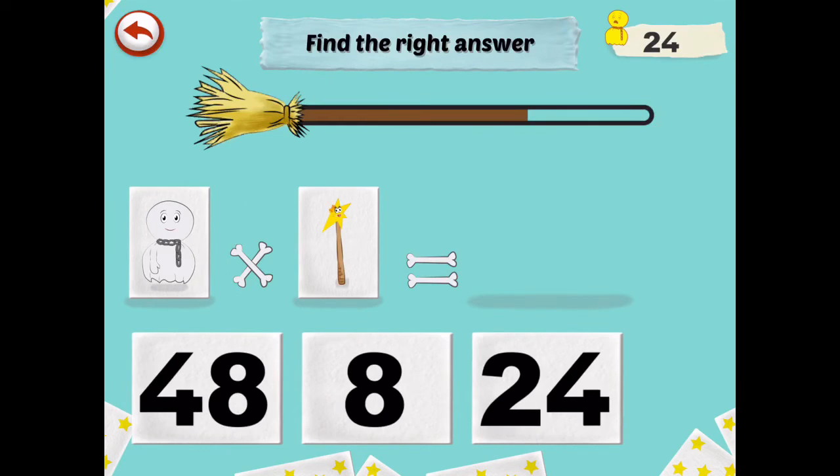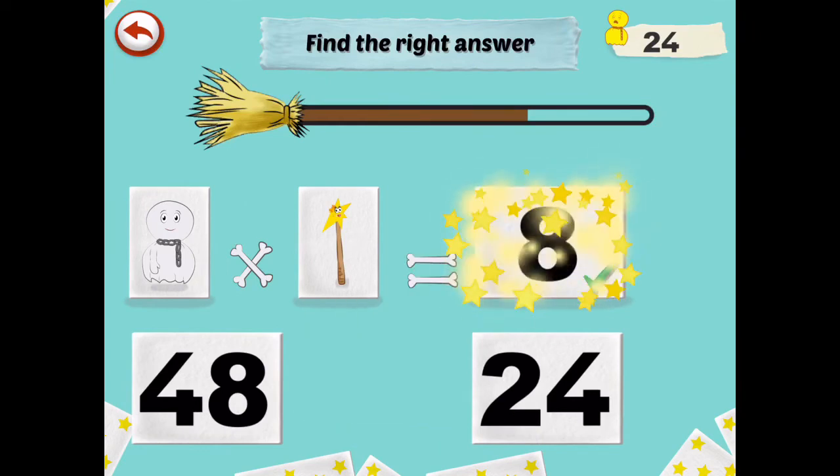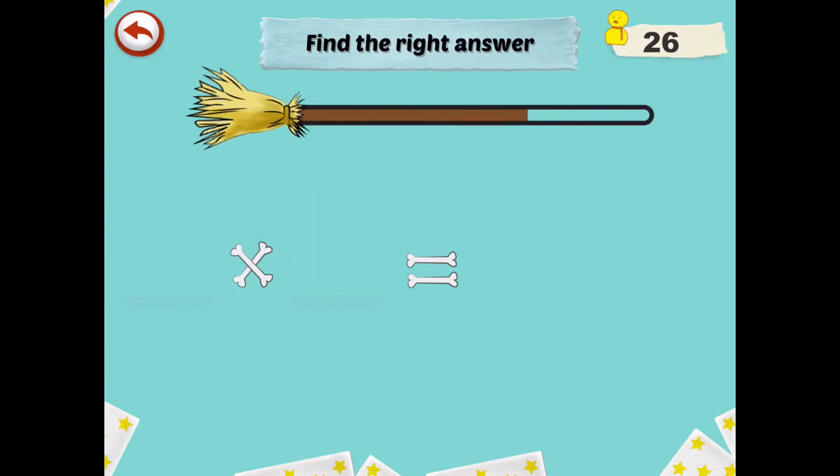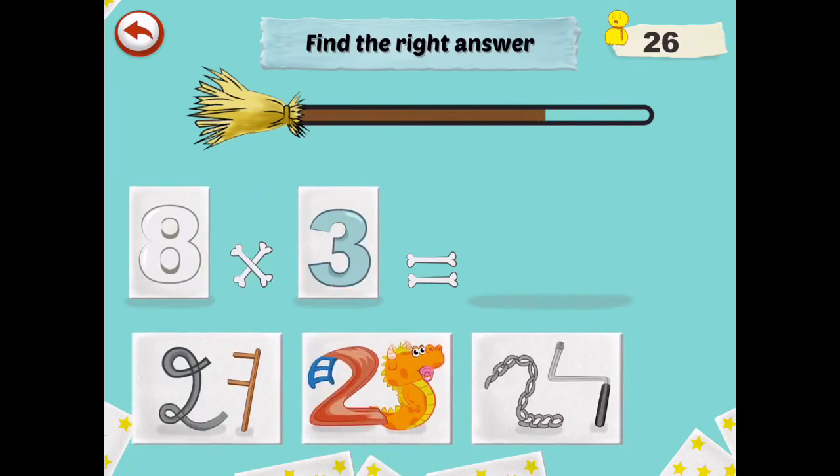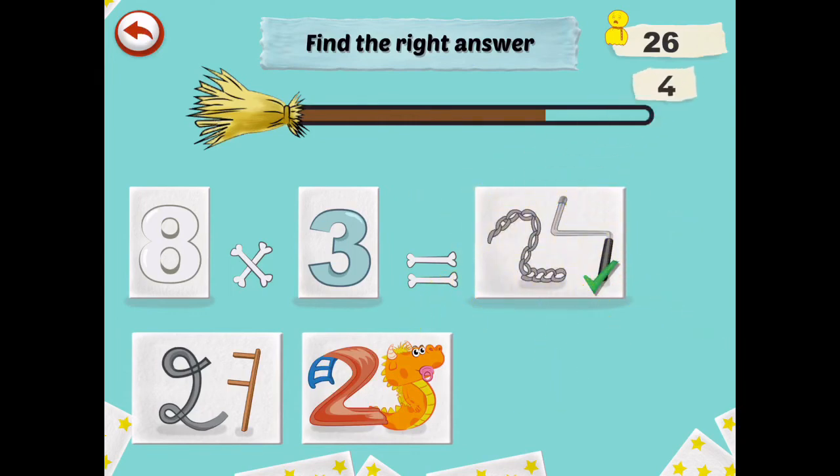8 times 1 is 8. So we're gonna do that. I feel like when the broom is full, it should be done. Okay. 8 times 3. Trying to trick us. With not giving us the characters. But you're not tricking me.